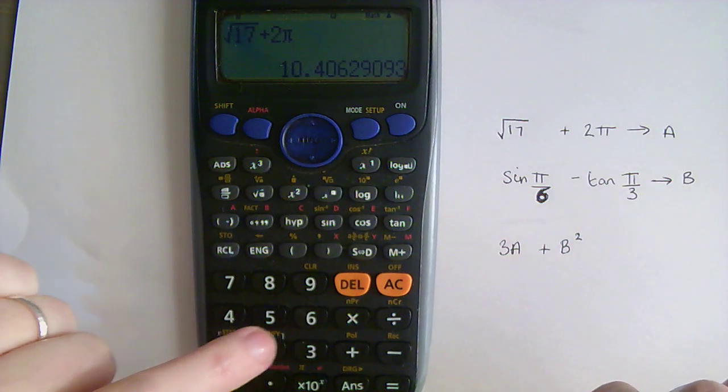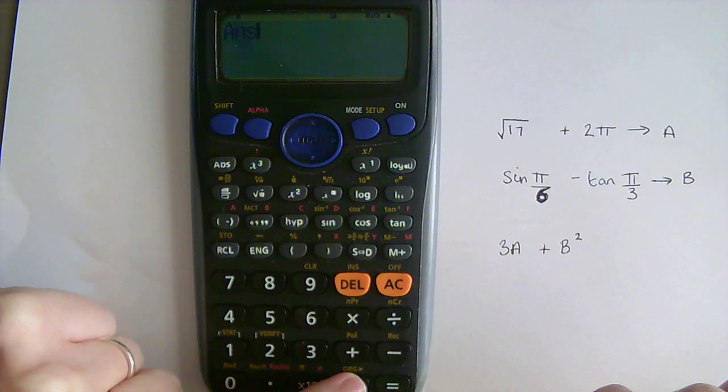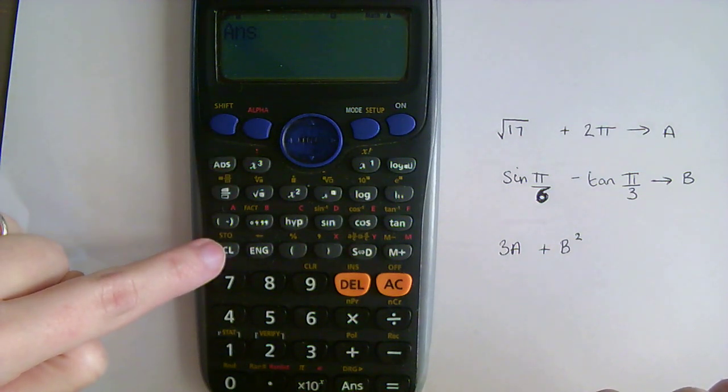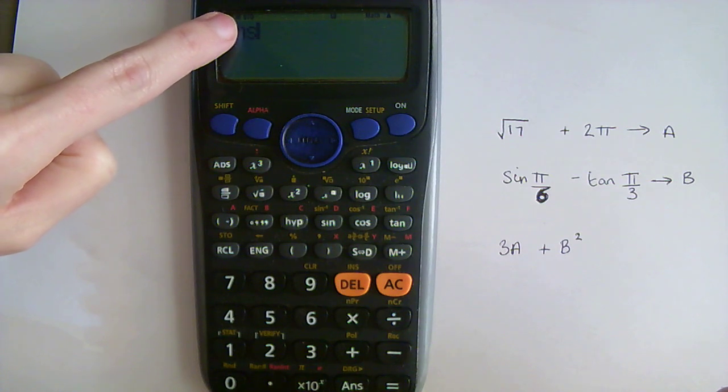So to do that, you press answer, and then we want to store it, S-T-O, in A, so I'm going to press shift, and then this RCL button here, and that will then come up with store at the top, and that's going to go in A.